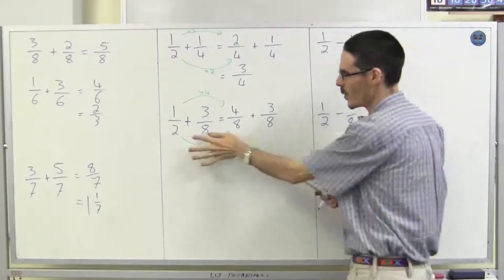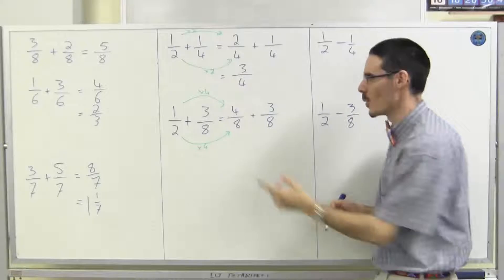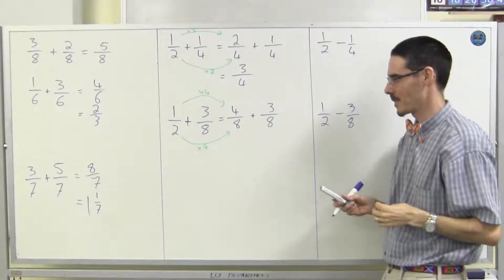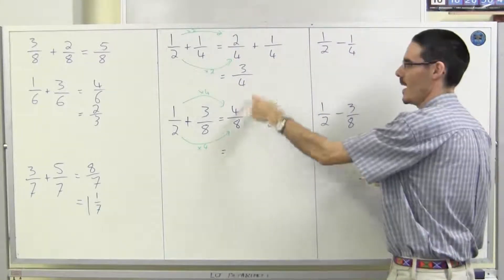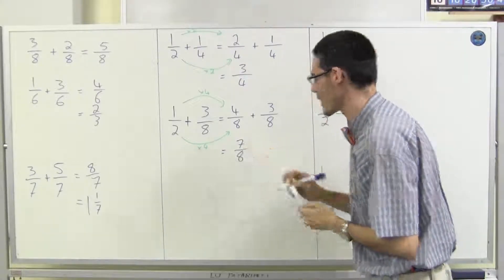Now, later on when you get more comfortable, you can skip writing that. You don't have to do it at all. I'm just doing it to help you see what I'm doing. Okay, now I've got two fractions with the same denominator and the numerators. Four and three makes seven eighths.